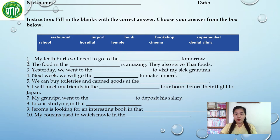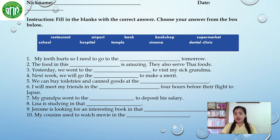Let's say for example number 1: 'My teeth hurts, so I need to go to the blank tomorrow.' In this sentence, it says that my teeth hurts, so where should I go? Very good — it's in the dental clinic. So the right answer is dental clinic. You need to write that word in here: 'My teeth hurts, so I need to go to the dental clinic tomorrow.' That is the answer.